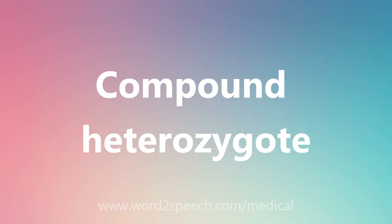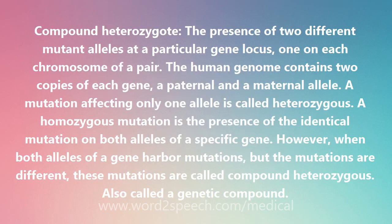Compound heterozygote: the presence of two different mutant alleles at a particular gene locus, one on each chromosome of a pair. The human genome contains two copies of each gene, a paternal and a maternal allele. A mutation affecting only one allele is called heterozygous. A homozygous mutation is the presence of the identical mutation on both alleles of a specific gene.